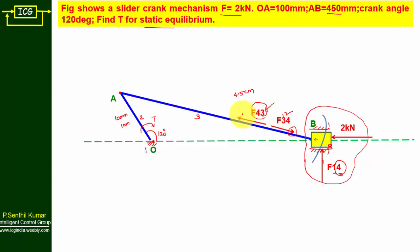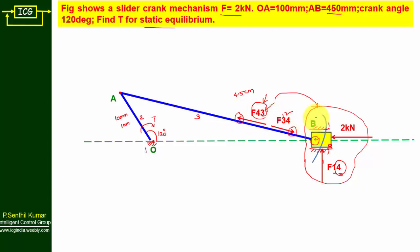When you draw a free body diagram, ensure that all forces act on the part being analyzed. We cannot use F43 while drawing the free body diagram of slider, because F43 means the force offered by slider 4 on the connecting rod. We must use F34 for the slider FBD. When drawing the free body diagram for the connecting rod, use F43.